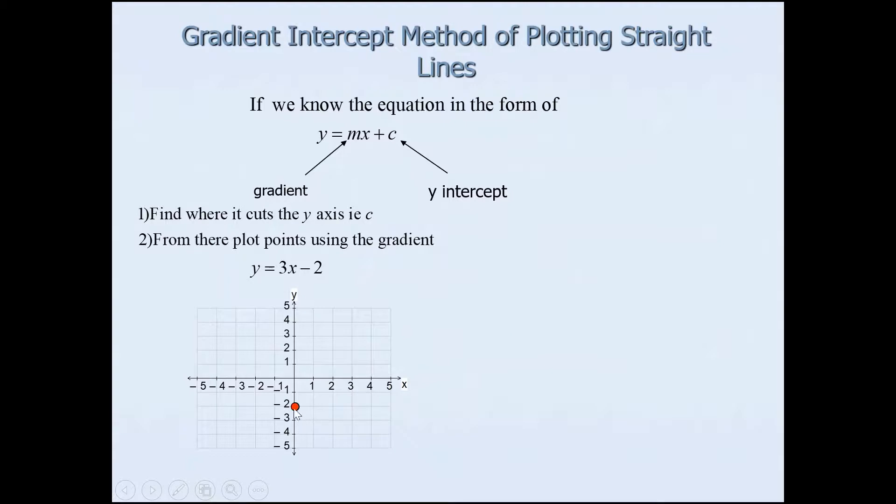So that's the y intercept. Make sure you know that it's the y intercept. So it has to go on the y axis. So y intercept is negative 2 and then the gradient value is 3.